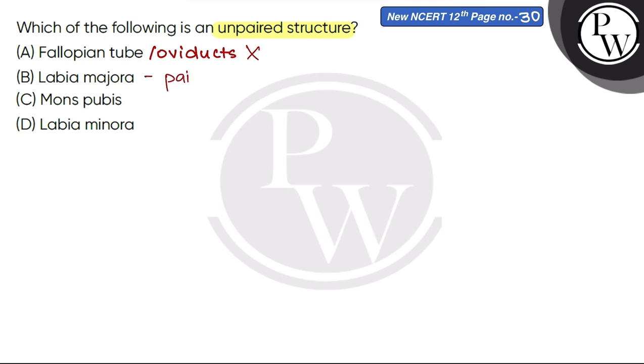Then Labia majora is also a paired structure - these are fleshy folds that extend from mons pubis and surround the vaginal opening.